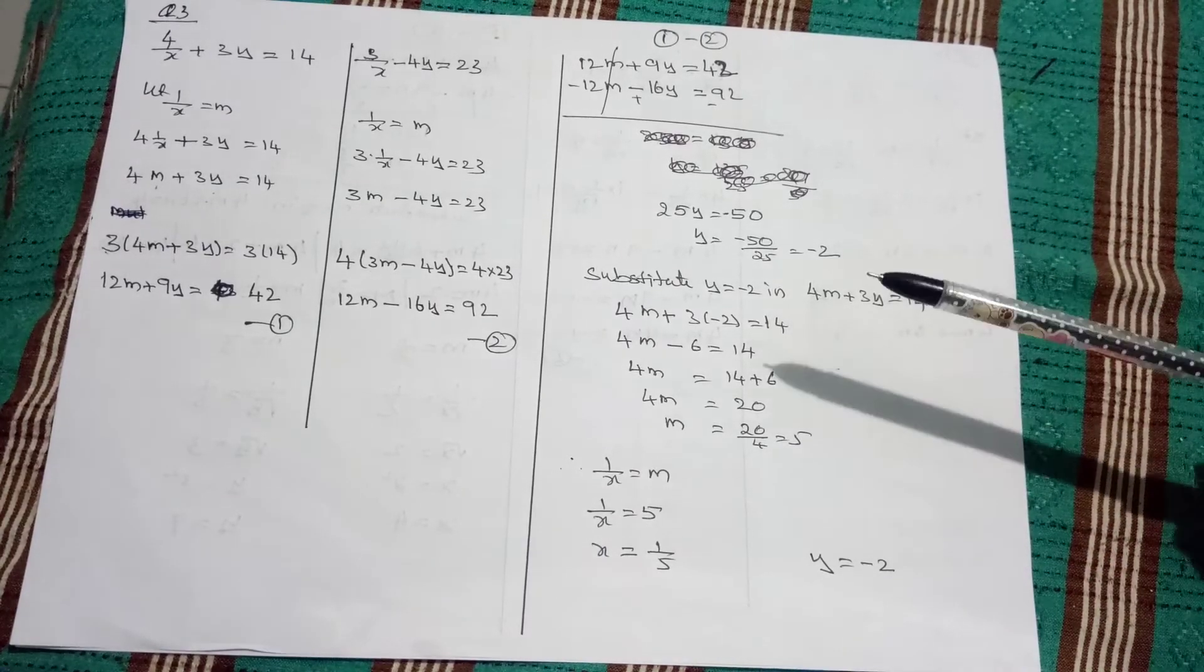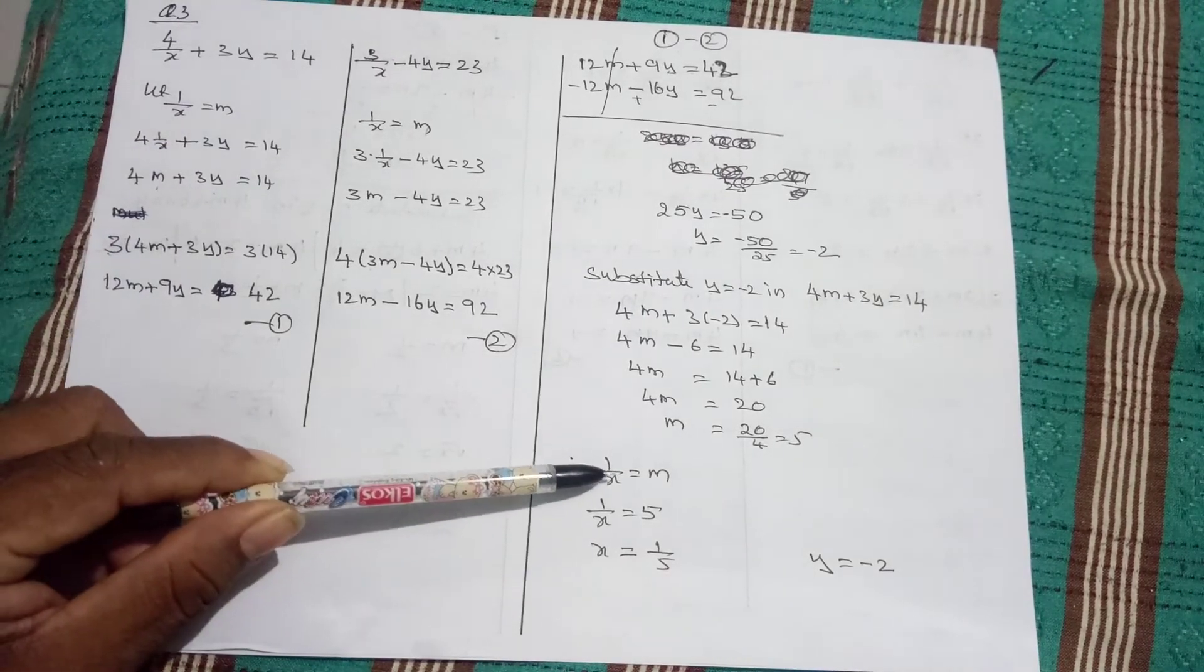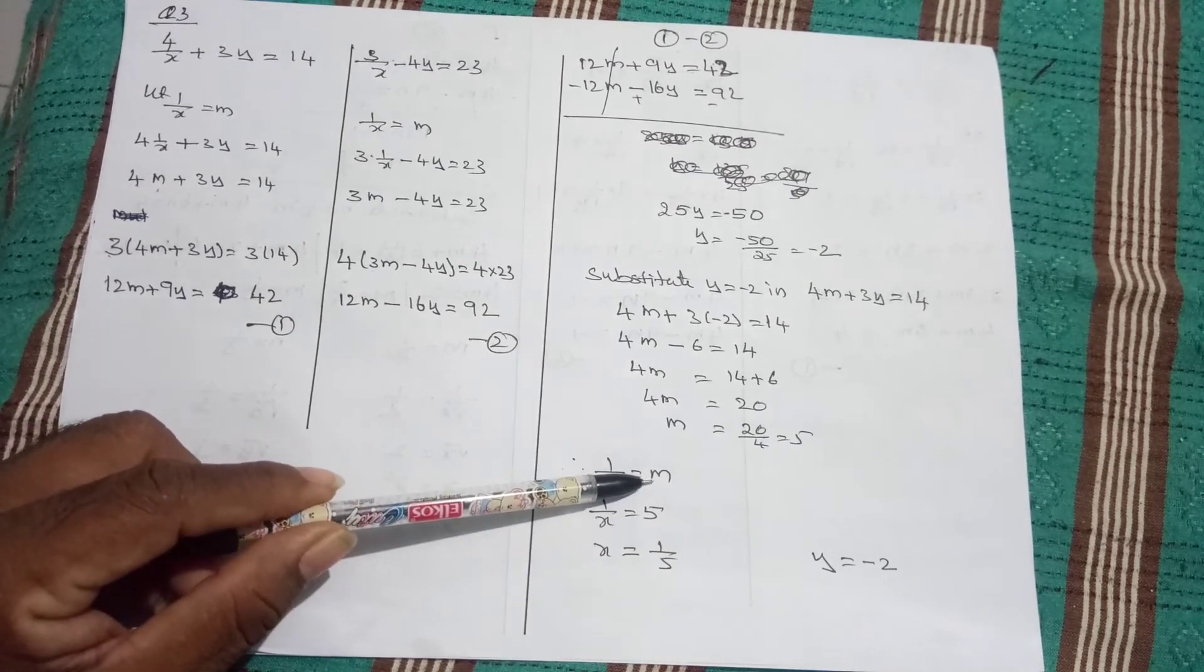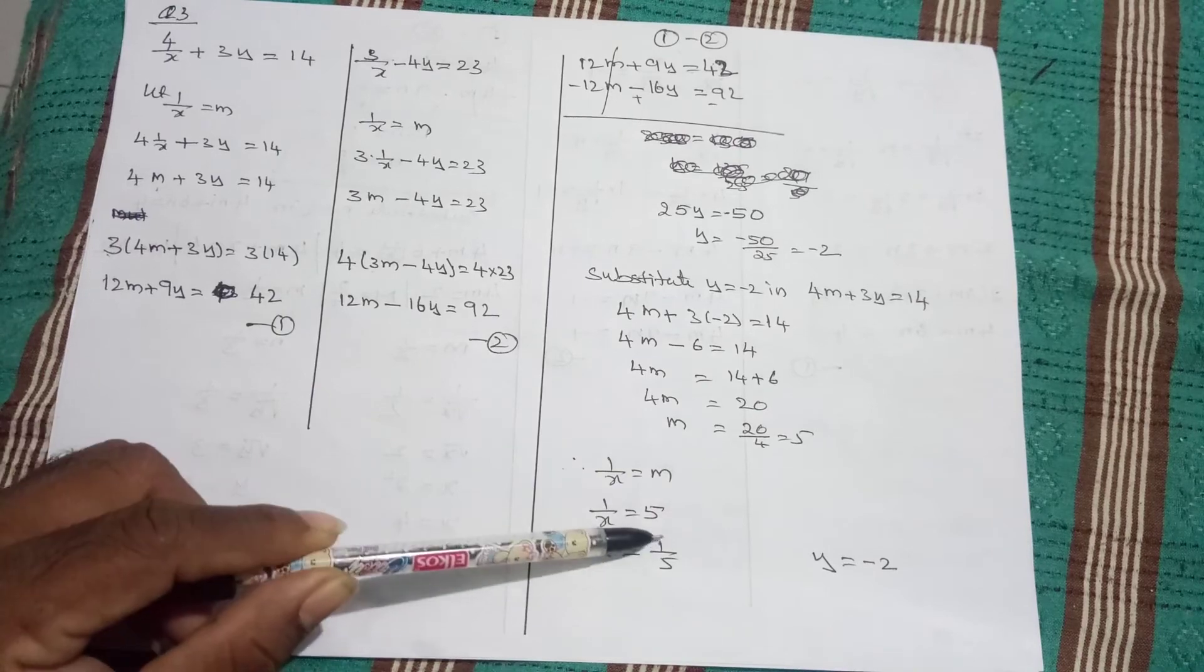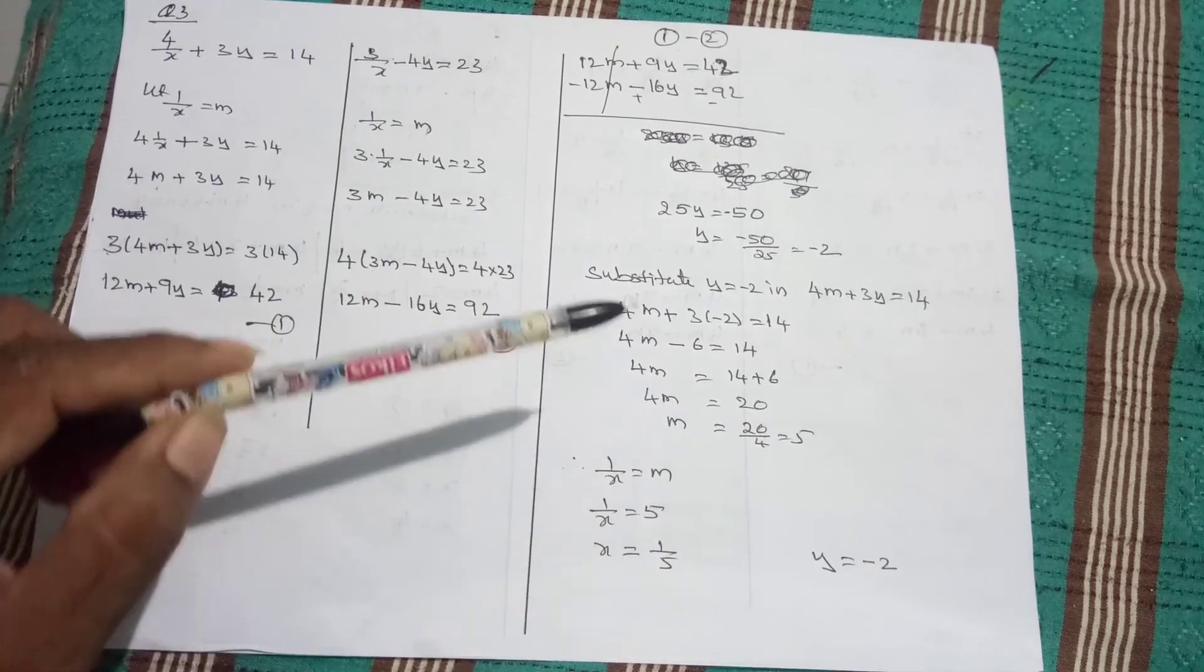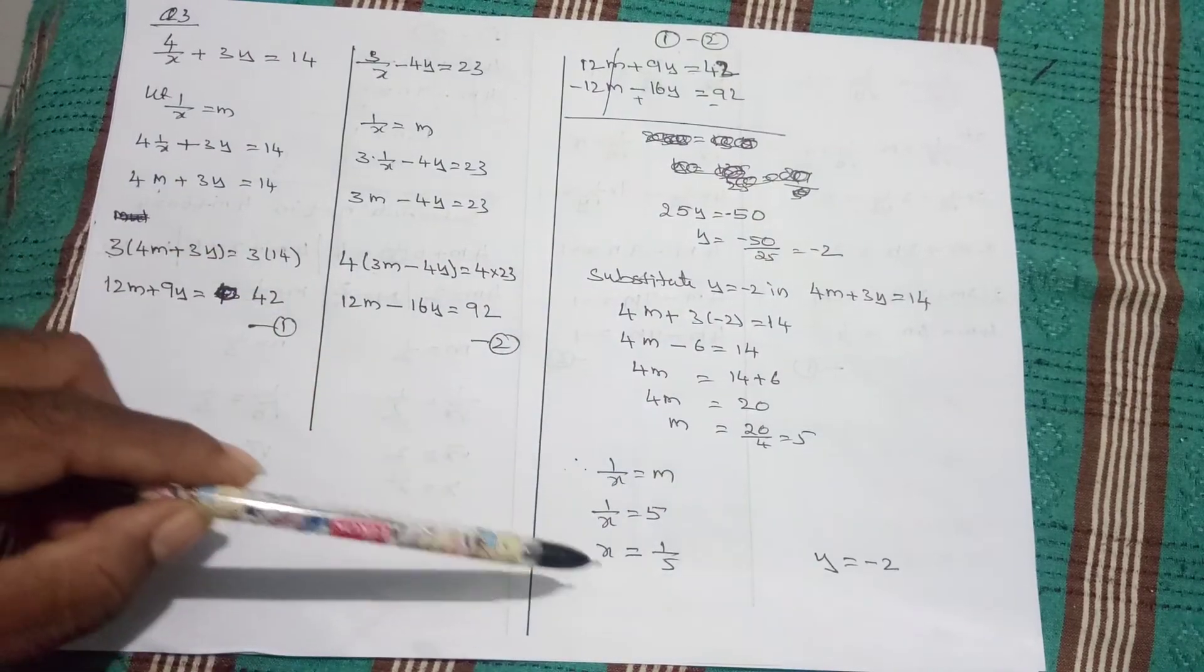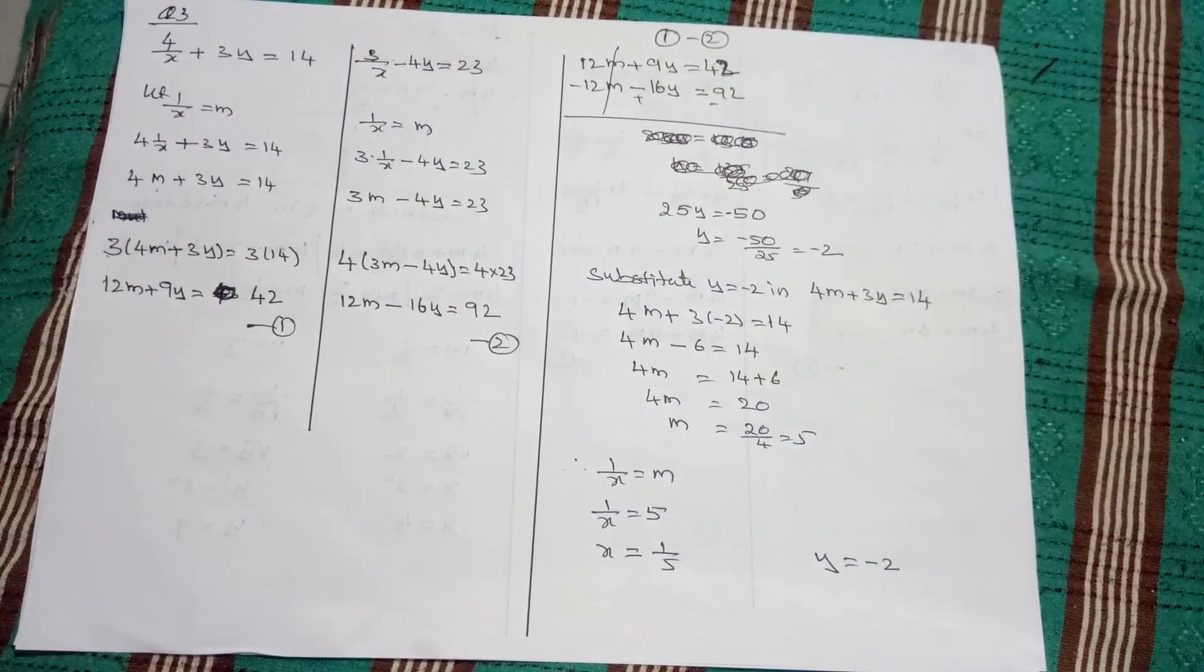We changed only 1 by x, that is m. 1 by x equals m. 1 by x equals, in place of m, we derived 5. Therefore, x equals 1 by 5. We already derived y, that is y equals minus 2. So, x equals 1 by 5, y equals minus 2. Solved.